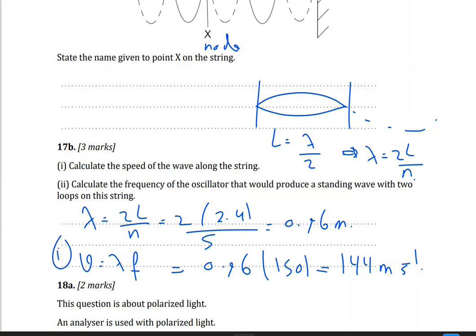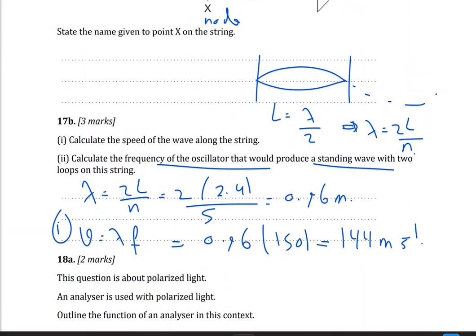So lambda 0.96 times the frequency 150, and this equals 144 meter per second. This is the first section. Second section, calculate the frequency of the oscillator that would produce standing waves with 5 loops on this string. Okay, so the frequency, let's do it here. Frequency is velocity over lambda, so v divided by 2L, and we put n on the top. n, I have 5, the fifth harmonic. So 5 times 144 divided by 2 times 2.4, and this will give us 60 hertz.